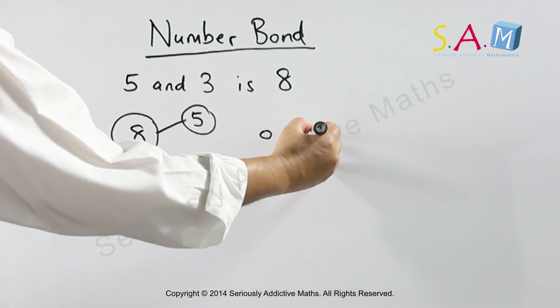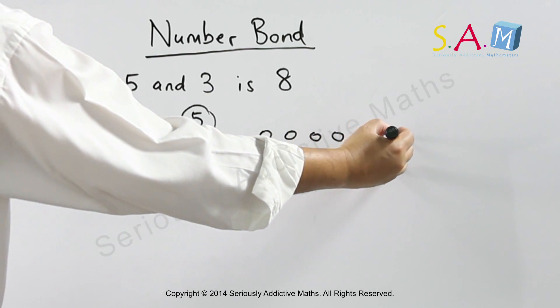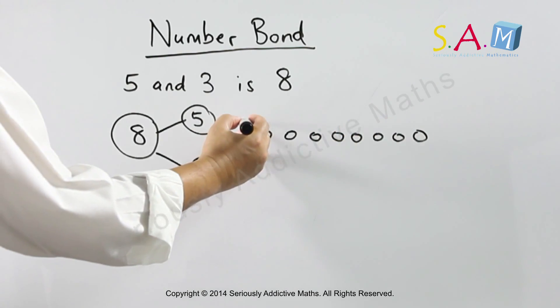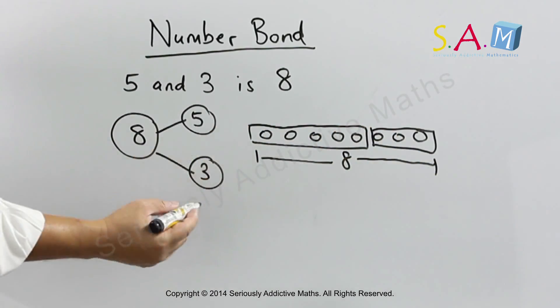1, 2, 3, 4, 5, 6, 7, 8. We have 5 and 3. You have 8. This is an example of a number bond.